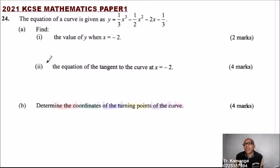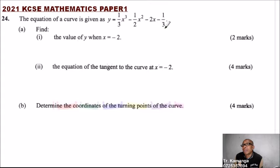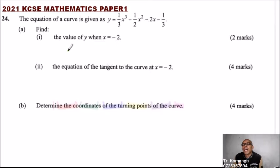Question number 24. The equation of a curve is given as y equals one-third x cubed minus one-half x squared minus 2x minus one-third. Part A, number 1: find the value of y when x is minus 2.